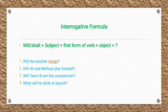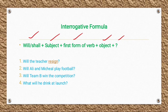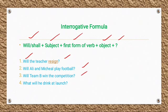The interrogative formula is: Will/Shall + subject + first form of the verb + object + question mark. For example: 'Will the teacher resign?' — 'will' is the helping verb, 'the teacher' is the subject, 'resign' is the first form of the verb. Other examples: 'Will Ali and Michael play football?', 'Will team B win the competition?', 'What will he drink at lunch?'